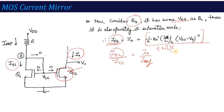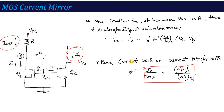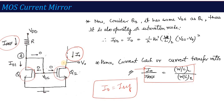So ID2/ID1 = [½ · k · (W/L)₂ · (VGS−VT)²] / [½ · k · (W/L)₁ · (VGS−VT)²]. The half, k, and (VGS−VT)² terms cancel out, leaving: I0/I_REF = (W/L)₂ / (W/L)₁. This is called the current gain or current transfer ratio — showing what ratio the output current bears to the input current. If the two transistors are identical, meaning the same channel width and length, then I0 = I_REF. That is why it is called a current mirror — when geometry is the same, the output current is a mirror image of the input current.